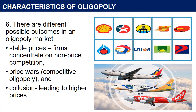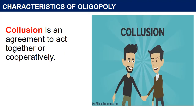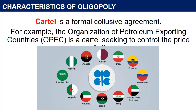6. There are different possible outcomes in an oligopoly market: stable prices where firms concentrate on non-price competition; price wars in a competitive oligopoly; and collusion, leading to higher prices. Collusion is an agreement to act together or cooperatively. It is illegal, but tacit collusion may be hard to determine. 7. For collusion to be effective, there needs to be barriers to entry. A cartel is a formal collusive agreement. For example, the Organization of Petroleum Exporting Countries is a cartel seeking to control the price of oil.